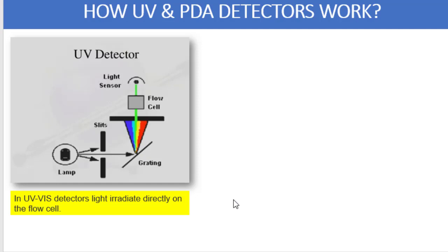This wavelength separation allows the selection of light with a suitable wavelength by using another slit. Suppose as a part of your analysis you want to determine the response at 254 nanometer, so that particular light generated by the diffraction grating will only pass through the second slit and then it will enter into the flow cell.